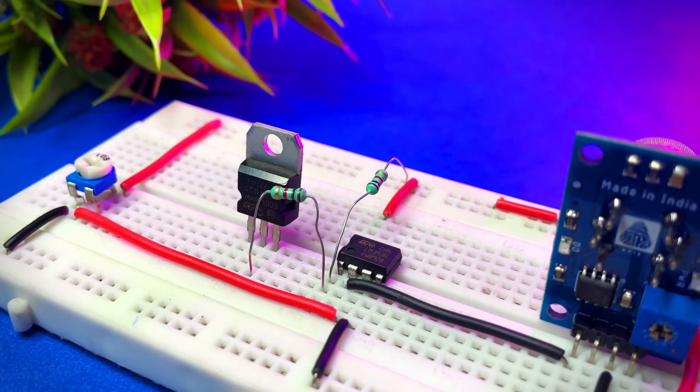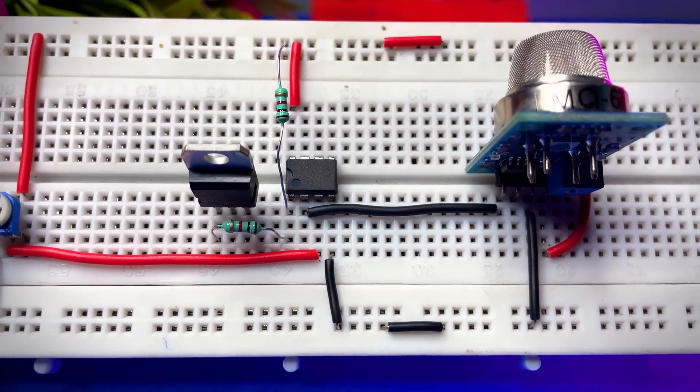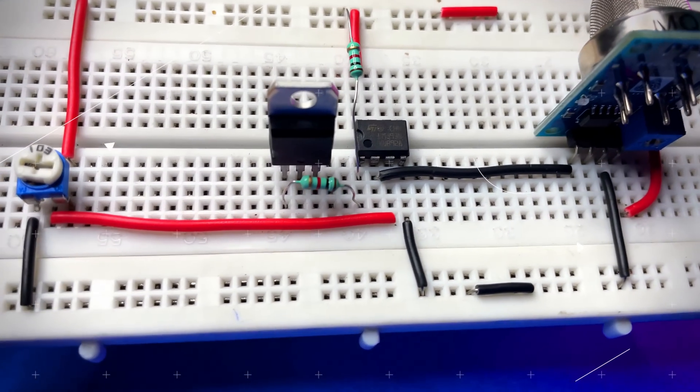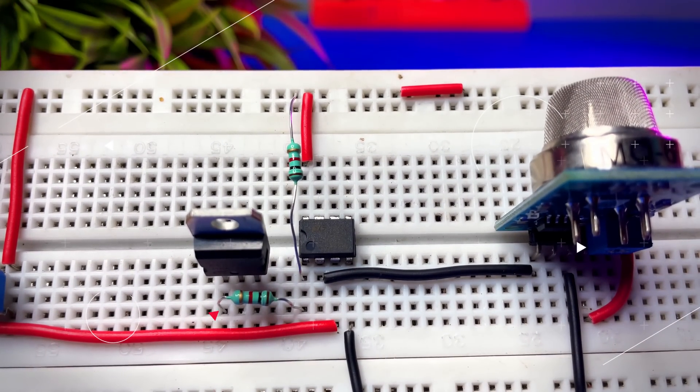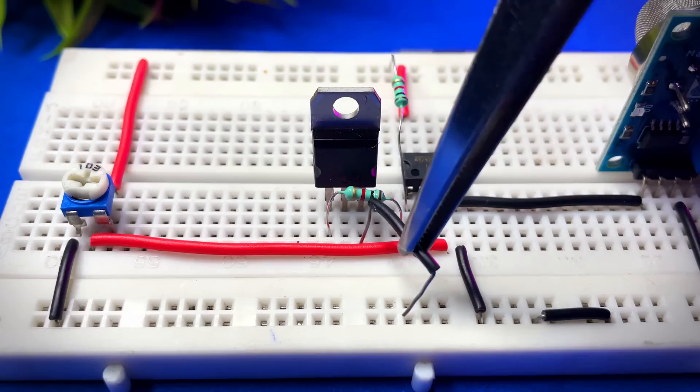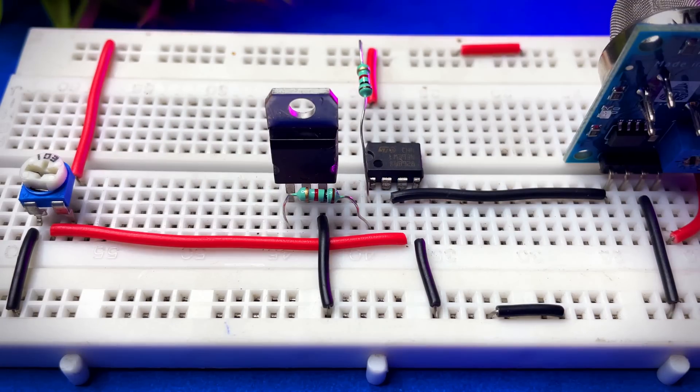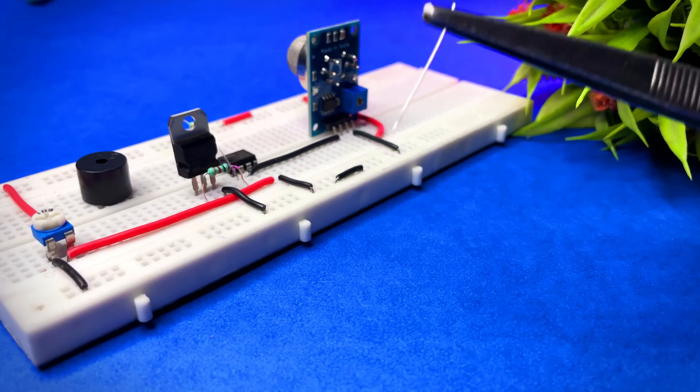In this transistor, pin number one is base, pin number two is collector, and pin number three is emitter. We need another 1k resistor which is connected between base of transistor and pin number one output of LM393. Pin number three which is emitter connected to ground. I am using this small buzzer for indication purpose.